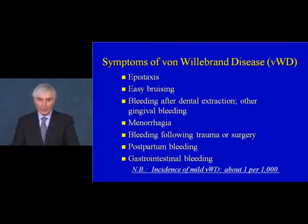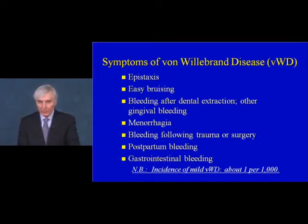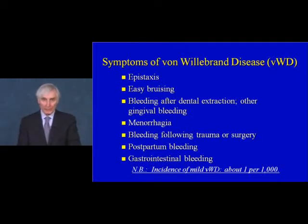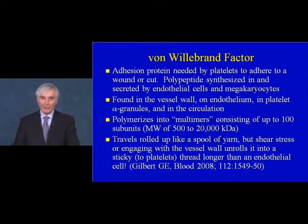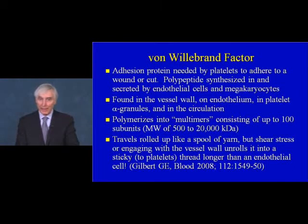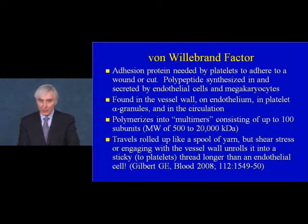Von Willebrand disease is perhaps the most common inherited bleeding condition, with a prevalence of approximately one person in a thousand in the general population. It is characterized by nosebleeds, easy bruising, bleeding after dental extraction or other gingival bleeding, heavy periods, bleeding following trauma or surgery, postpartum bleeding, or gastrointestinal tract bleeding. The von Willebrand factor is an adhesion protein important in allowing platelets to adhere to damaged vessel wall. It is a polypeptide synthesized and secreted by both endothelial cells and megakaryocytes, found in the vessel wall and platelet alpha granules, and can polymerize into multimers of up to 100 subunits with molecular weight approaching 20 million Daltons.